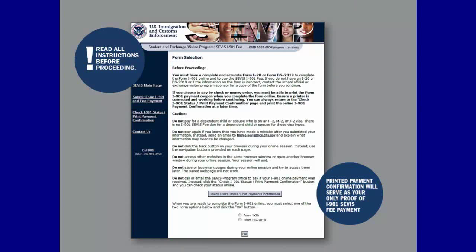Once you select the Submit Form I-901 and Fee Payment button, you will arrive at the Form Selection page. This page provides important information you should read before filling out the Form I-901 and paying the I-901 SEVIS fee. You must have a complete and accurate Form I-20, Certificate of Eligibility for Non-Immigrant Status, or Form DS-2019, Certificate of Eligibility for Exchange Visitor status, and must be able to print from your computer if you choose to pay by check or money order.